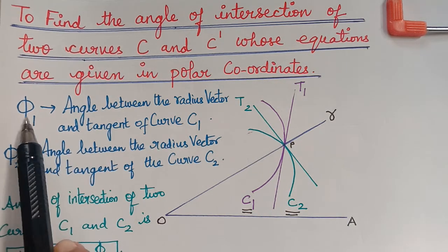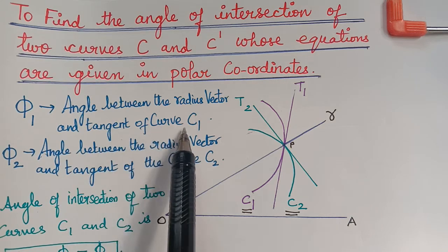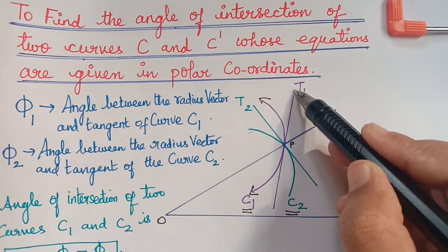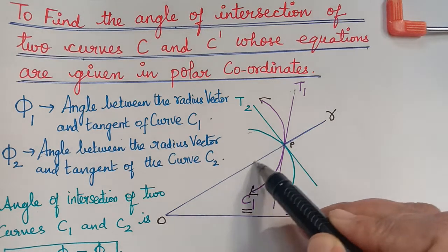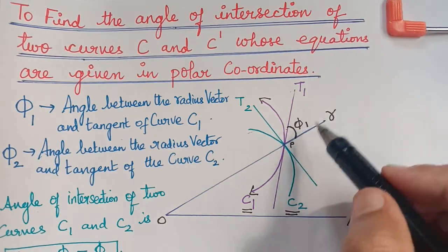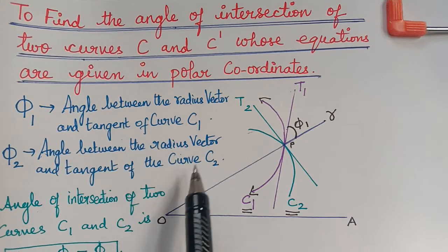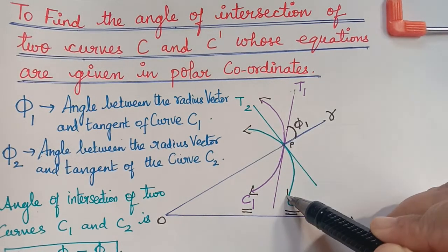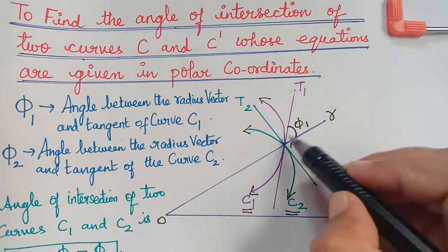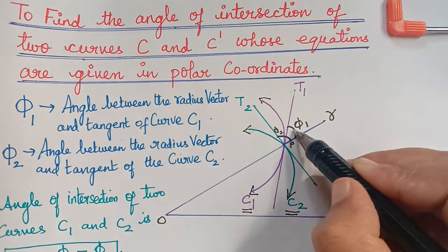We are going to consider phi1 to be the angle between the radius vector and the tangent of the curve C1. For this curve, T1 is the tangent and this is the radius vector. The angle between the tangent and the radius vector is represented as phi1 for curve C1, and phi2 represents the angle between the radius vector and the tangent of curve C2.